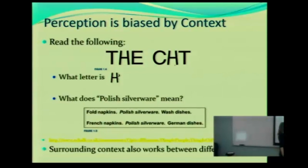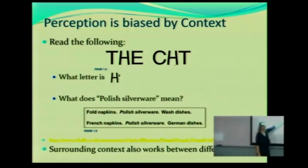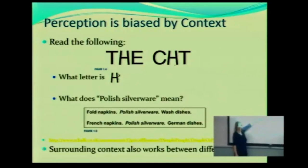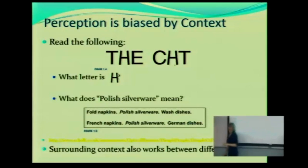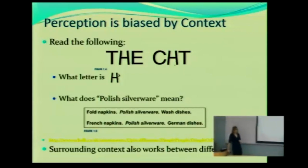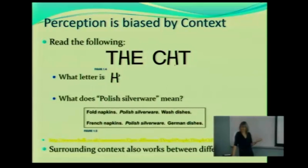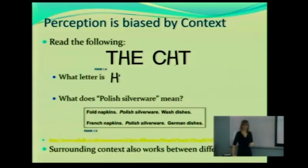I want you to read this first sentence right here, the one on top. Okay, now the next one. Wait a second — how do you pronounce that? Are you sure? It depends on the sentence. Think about how naturally it came out of your mouth depending on the context — you didn't have to think about it. So: fold napkins, polish silverware, wash dishes. French napkins, polish silverware, German dishes. Again, it depends on the context, and we pick up on that really quickly. We're really good at it.